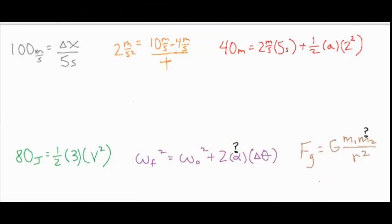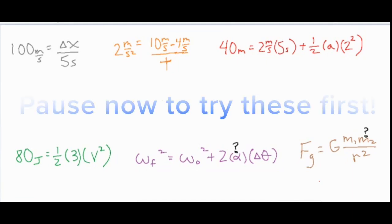In this video we're going to do a quick math tutorial and practice to help you prepare for physics. On the screen we have six different formulas — four of which you'll be solving for an exact number value, and two you'll be solving in terms of the other variables. The last two in purple and brown you'll solve for alpha and m2 respectively. If you want to try all six problems first, pause the video now.